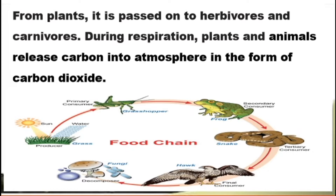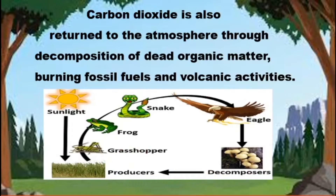During respiration, plants and animals release carbon into the atmosphere in the form of carbon dioxide. During photosynthesis the carbon is taken in, and during respiration carbon dioxide is released. Carbon dioxide is also returned to the atmosphere through decomposition of dead organic matter. After animals, humans, or plants die and decompose, carbon dioxide is automatically released.